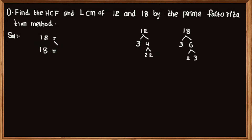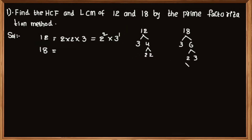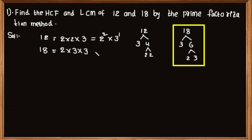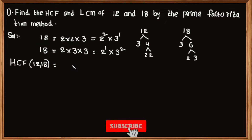12 is equal to 2 multiplied by 2 multiplied by 3, that is equal to 2 to the power 2 multiplied by 3 to the power 1. Similarly, 18 can be factorized as 2 multiplied by 3 multiplied by 3, that is equal to 2 to the power 1 multiplied by 3 to the power 2. Now we can find HCF and LCM.